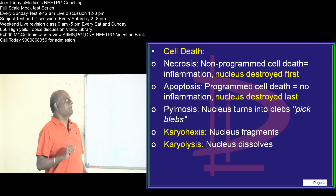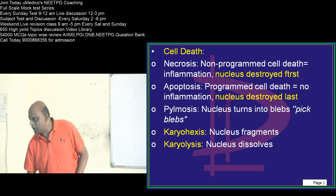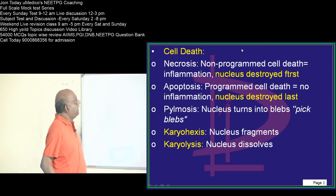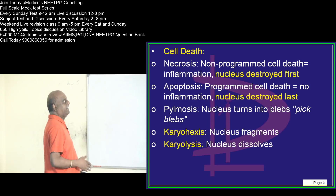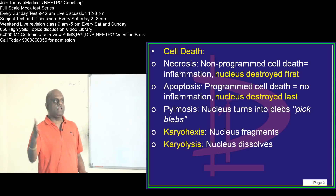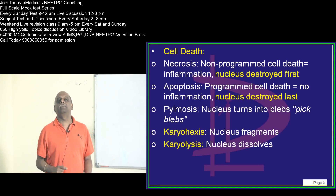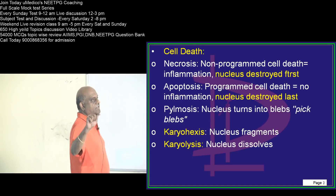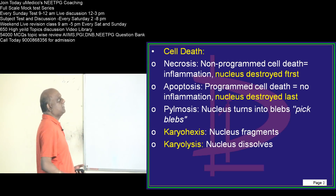Now, in cell death — what is the difference between necrosis and apoptosis? Apoptosis is programmed cell death, whereas necrosis is non-programmed cell death. In apoptosis there is no inflammation, but in necrosis there is inflammation. The most crucial thing favorably asked in MCQs is that the nucleus is destroyed first in necrosis, whereas the nucleus is destroyed last in apoptosis.